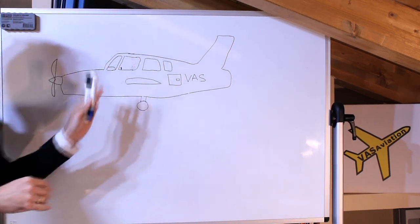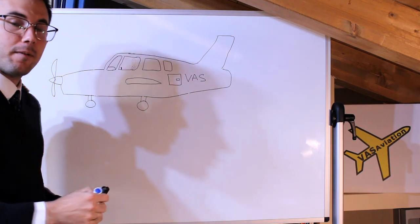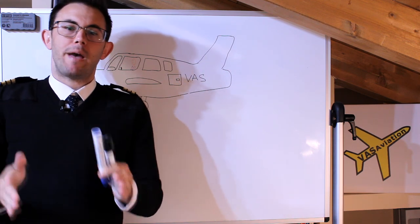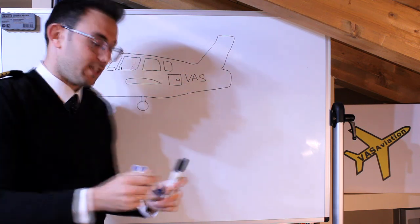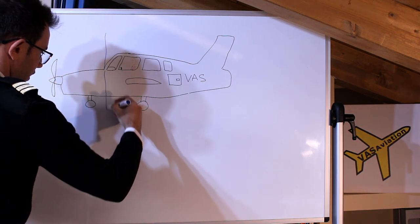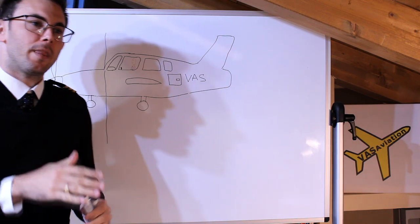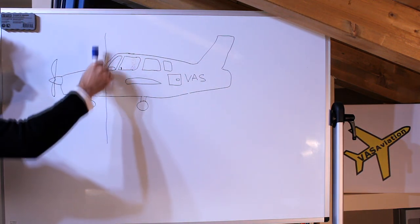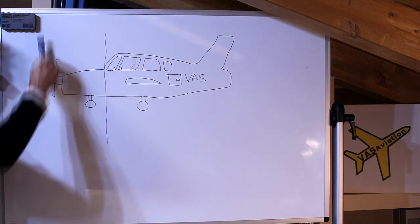So here you can see the brand new aircraft we have acquired for the VAS Aviation Flight Academy — nah, just kidding. The first term we have to learn today is the datum. The datum is an imaginary line or point that the manufacturer sets for the measure of the different parameters and figures we need to calculate in order to finally calculate the CG, which is the center of gravity of the aircraft.